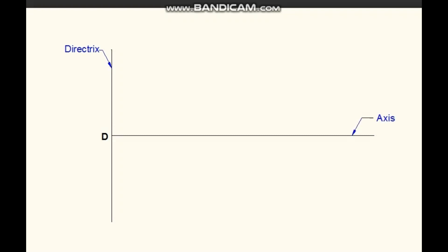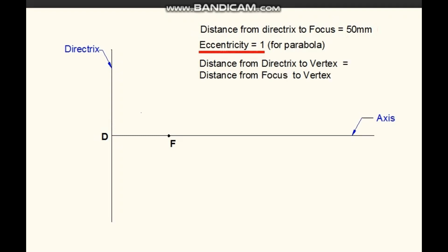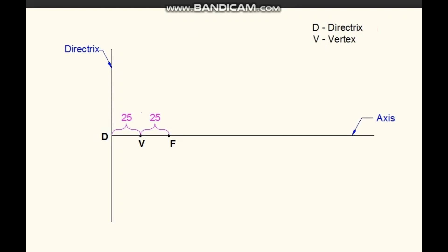In this example, we are taking the distance of focus from directrix as 50mm. Eccentricity ratio of parabola is 1. Since the focus distance is 50mm, 50mm is marked on the axis from point D. This is focus point F. Since eccentricity ratio is 1, distance from directrix to vertex is equal to the distance from the focus to the vertex. Mark the midpoint of DF as V. D is directrix, V is vertex, and F is focus.